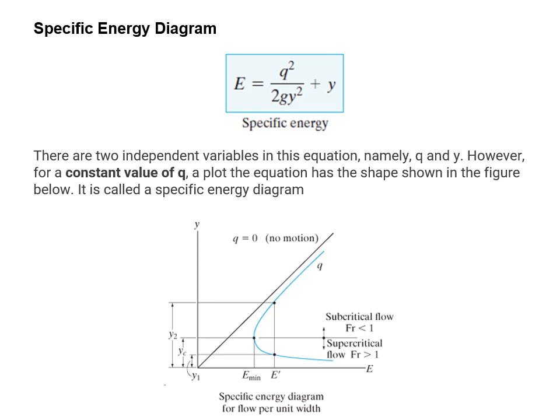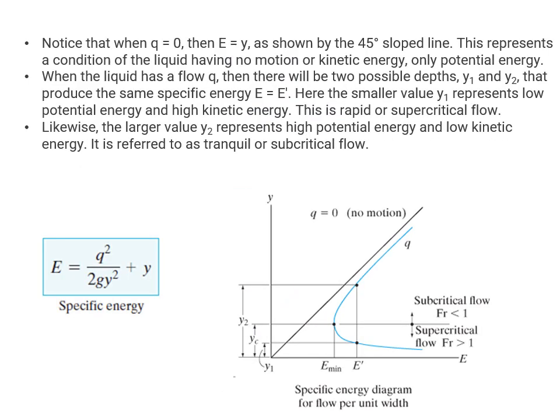In the specific energy equation there are two independent variables: Q and Y. For a constant value of Q, a plot of the equation has the shape shown — this is known as the specific energy diagram. The graph plots Y on the Y-axis and energy on the X-axis. When Q is zero, there is a straight line at 45 degrees representing liquid with no motion — only potential energy. When the liquid has a flow Q, there are two possible depths that produce the same specific energy.